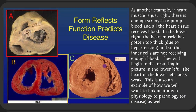Another example: if heart muscle is just right, there's enough strength to pump blood and all heart tissue receives blood. But if heart muscle gets too thick — as happens with high blood pressure, since any muscle worked hard gets thicker — blood vessels on the outside can't reach the inner structure, which begins to die. As inner tissue dies the heart gets bigger but thinner, and we can see just by looking that this heart won't pump blood well. This is congestive heart failure. Form reflects function, and that predicts disease.